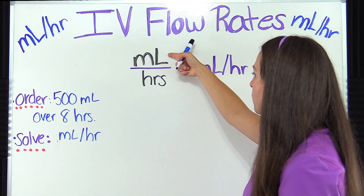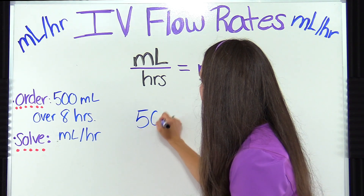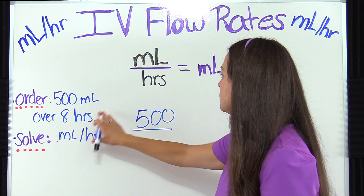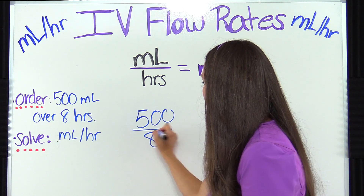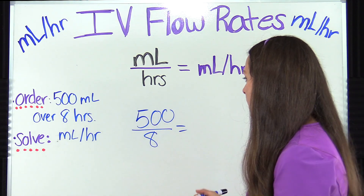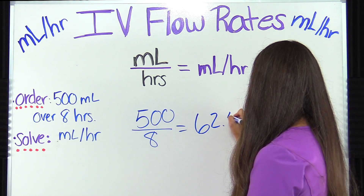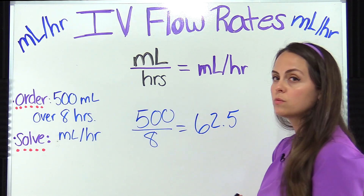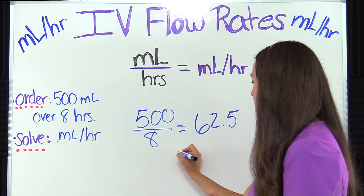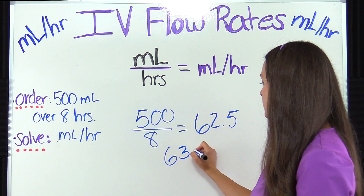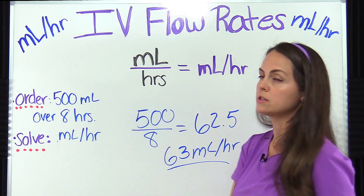The first part is our total volume: 500 milliliters. That's going to be divided by the hours — they need to receive this over an eight-hour period, so that's over eight. 500 divided by eight equals 62.5. With these calculations we round to the nearest whole number, so 62.5 rounds to 63. So 63 milliliters per hour is what the patient needs to receive in order to equal what the physician ordered.